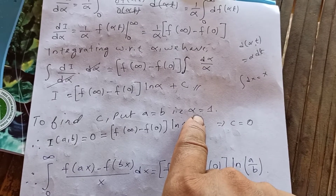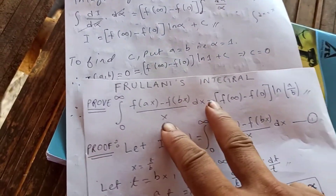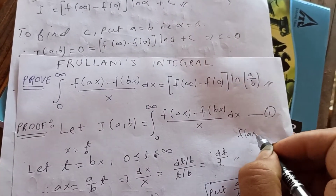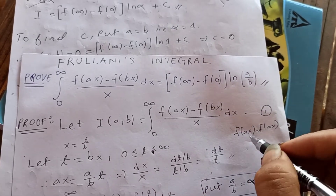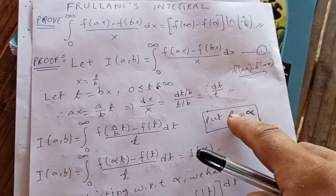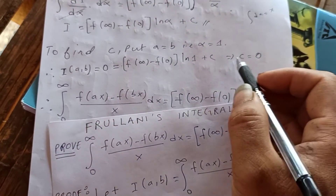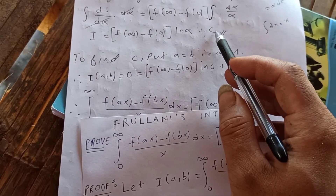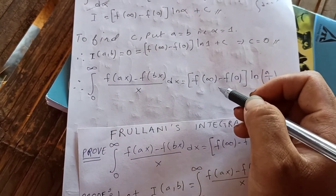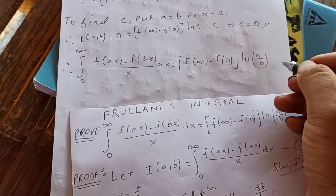To find C, let a = b, so α = a/b = 1. When a = b, f(ax) - f(bx) = f(ax) - f(ax) = 0, so I = 0. Substituting: 0 = [f(∞) - f(0)] · ln(1) + C = 0 + C, so C = 0. Therefore the integral from 0 to infinity of [f(ax) - f(bx)] / x dx = [f(∞) - f(0)] · ln(a/b).